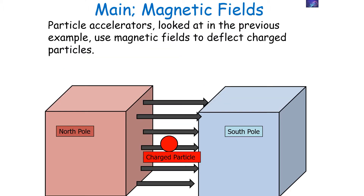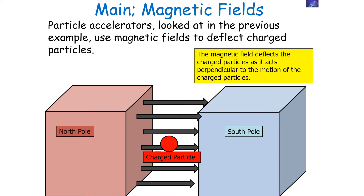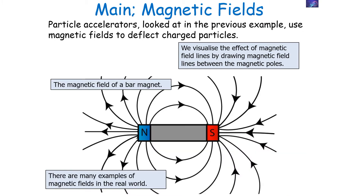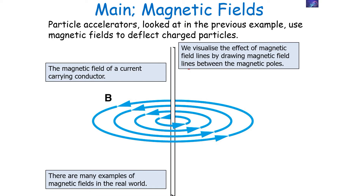Particle accelerators, which we've looked at in previous examples, use magnetic fields to deflect charged particles. The magnetic fields deflect the charged particles as they act perpendicular to the motion of the charged particles. We can visualise the effect of a magnetic field by drawing magnetic field lines between these magnetic poles. A famous example we've looked at already is the magnetic field of a bar magnet, but we've also looked at the magnetic field of a current carrying conductor, as any charged object which is in motion can produce a magnetic field.